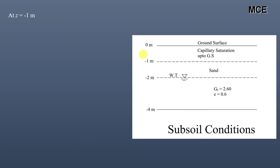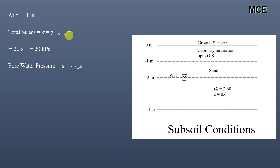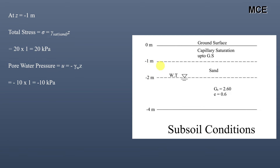At Z = 1 meter depth: total stress = γ_sat × Z = 20 × 1 = 20 kPa. Pore water pressure is again negative because this 1 meter depth is still within the capillary saturation zone. Pore water pressure = −10 × 1 = −10 kPa. Effective stress = σ − u = 20 − (−10) = +30 kPa.